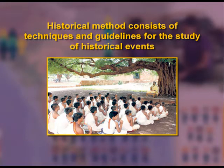Historical method consists of techniques and guidelines for the study of historical events. It comprises techniques and guidelines by which historians use primary sources and other evidences to conduct research and write histories as accounts of the past. For example, in the past there was neither a definite classroom nor a specific subject teacher — in an open space or in a hall, one teacher or guru used to teach a large number of students.